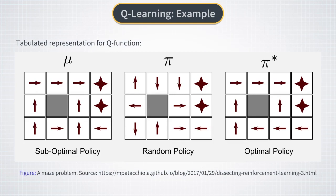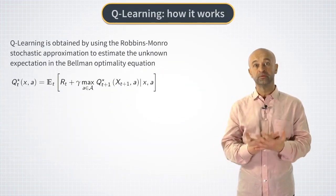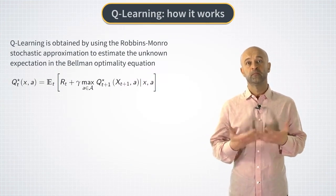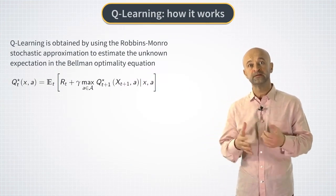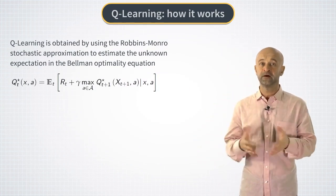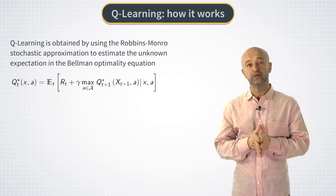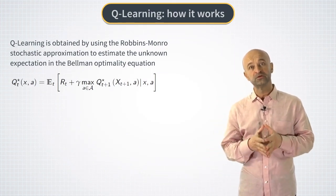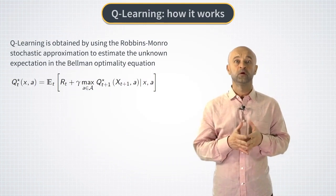Now, after we spoke about what Q learning does, let's talk about how it does it. In essence, Q learning is just application of the Robbins-Monroe stochastic approximation, but this time to estimate the unknown expectation that arises in the right-hand side of the Bellman optimality equation.